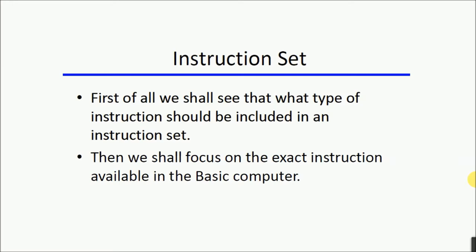For this basic computer we are discussing in this course, it has around 25 instructions in its instruction set. The PIC microcontroller we are going to use has around 100. Some other microcontrollers have around 200 to 300, and some very complex CISC-based microprocessors have around a thousand or even more instructions. The basic purpose of defining an instruction set is to utilize all the hardware capabilities of our computer, which are defined by the computer architecture.